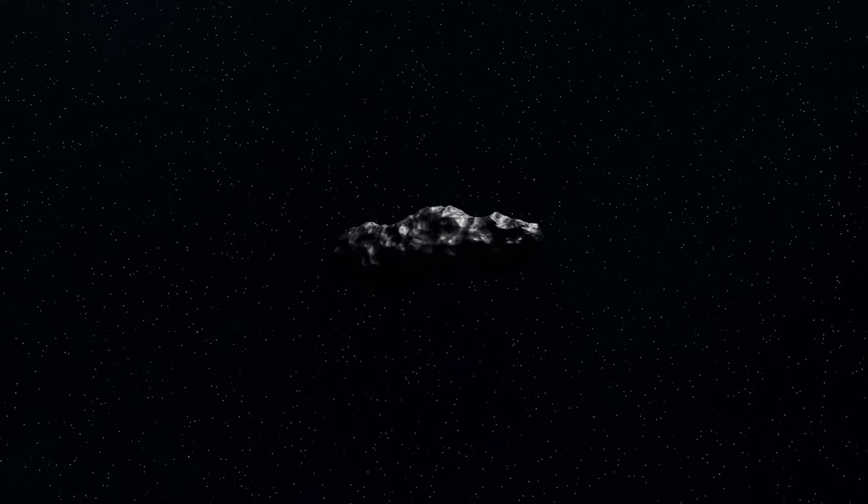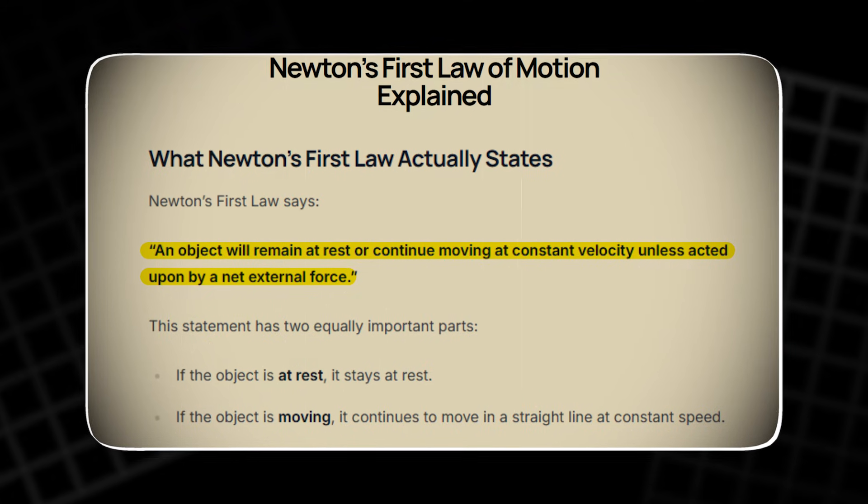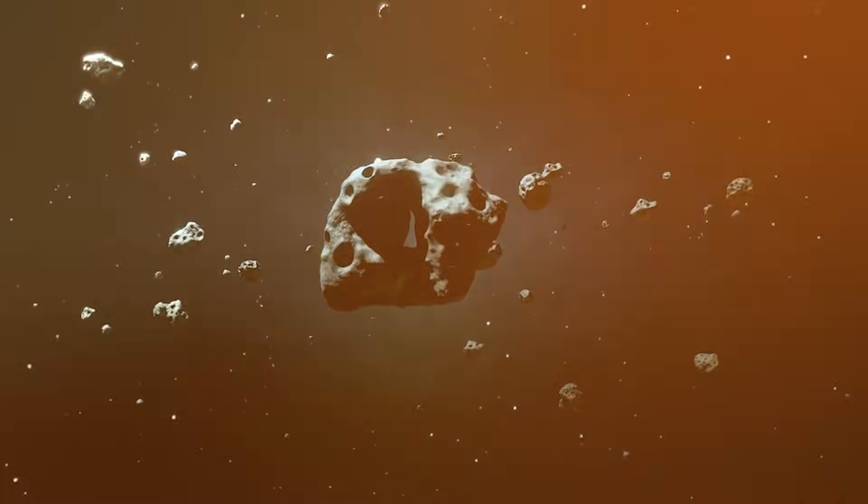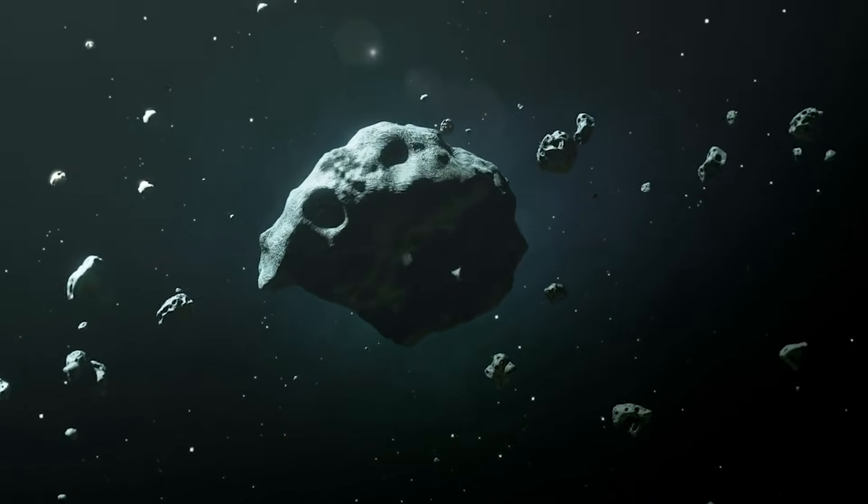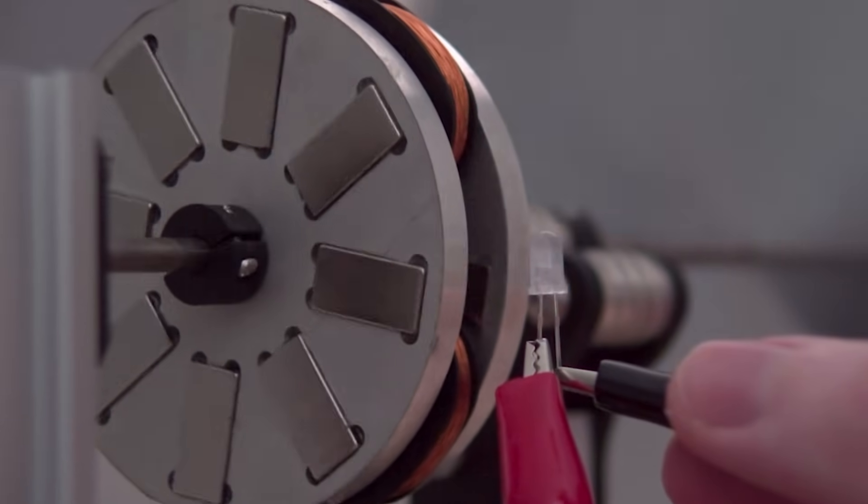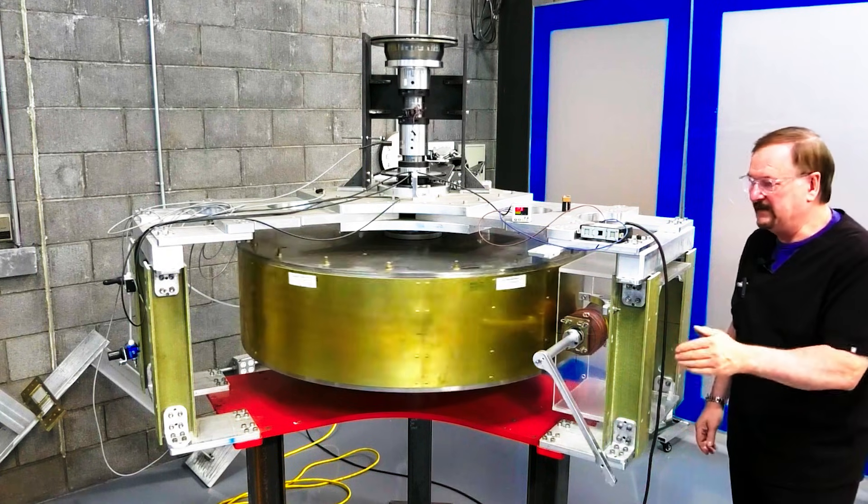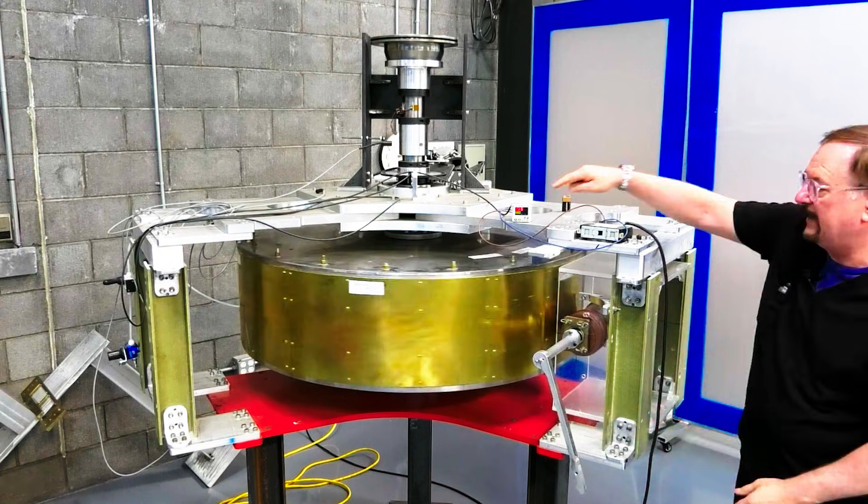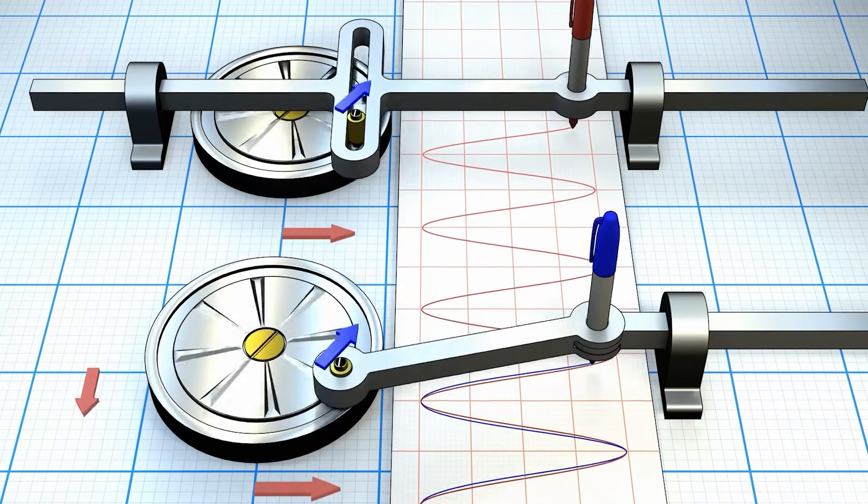It cannot power anything without slowing down. Newton's first law explains this clearly: an object stays in motion if nothing stops it. This is not free energy, it is simply motion without resistance. Many people point to flywheels as proof that endless energy is possible. But flywheels are storage devices. They take energy in and release it later. They do not create energy from nothing. And if you take too much out, the wheel slows.